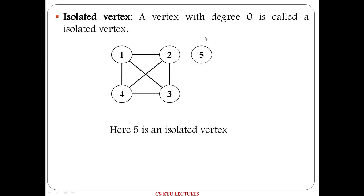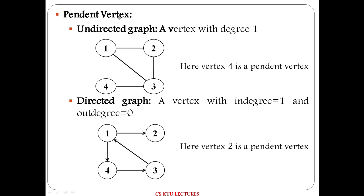What is an isolated vertex? If a vertex has no edges connected to it, it is called an isolated vertex. Here, vertex 5 is an isolated vertex. Next, what is a pendant vertex? In an undirected graph, a vertex with degree one is a pendant vertex. Vertex 4 has degree one, so vertex 4 is a pendant vertex. In a directed graph, a pendant vertex has in-degree one and out-degree zero. Vertex 2 has in-degree one and out-degree zero, so vertex 2 is a pendant vertex.